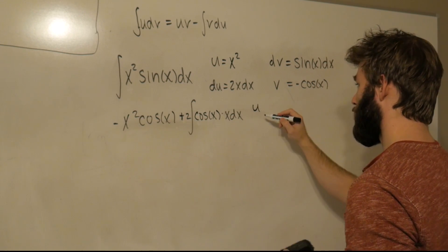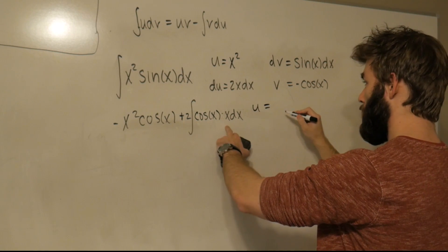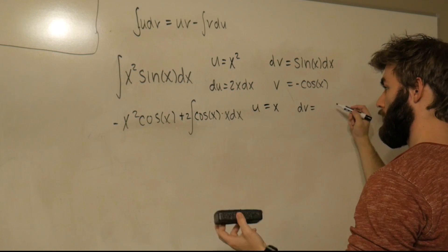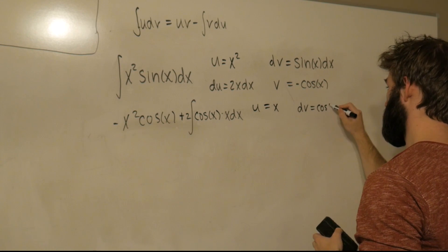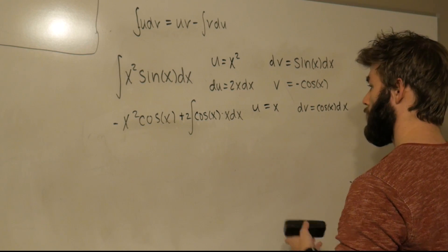So right now, we're going to have to do integration by parts again. So let's call this one... let's just use the same one. I think we're smart enough to not get confused with these. So we're going to let u equal x, dv equal cos(x) dx. Do you still see that? Yes, you can. Okay.